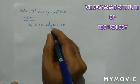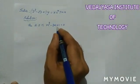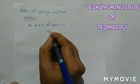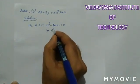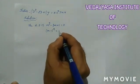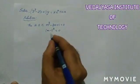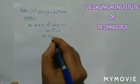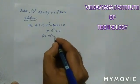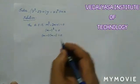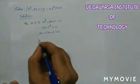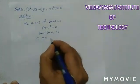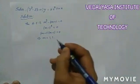m² - 2m + 1 can be factored as (m - 1)² = 0, which means (m - 1)(m - 1) = 0. This implies m = 1, 1 (repeated roots).